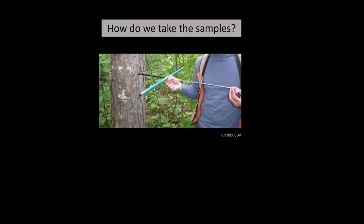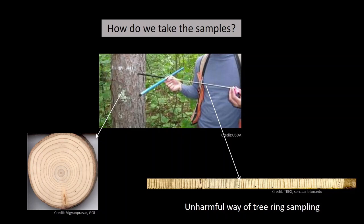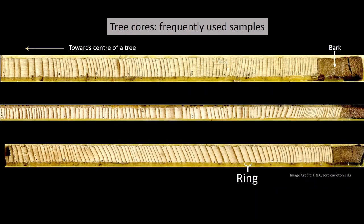How do we take samples? We can take a cross section of a tree — for example, if a tree has already fallen due to cyclonic activity or been cut for any reason. The most preferred way is to take a tree ring core using a corer. The shaft goes inside and we extract a core. When you take this core and polish it, you can see individual rings. Various tree cores are shown here — on the right-hand side is bark, and on the left it goes towards the center.